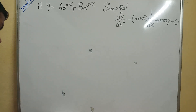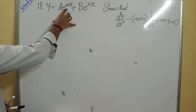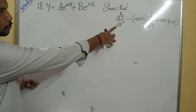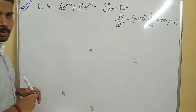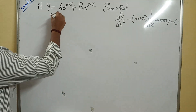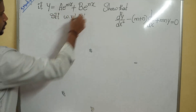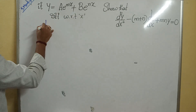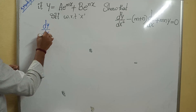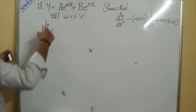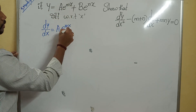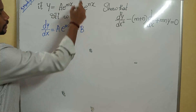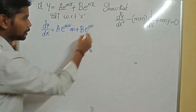Focus on the next question — also a 5-marks question. Given y = ae^(mx) + be^(nx), we need to prove that d²y/dx² − (m+n)dy/dx + mn·y = 0. Differentiating with respect to x: dy/dx = a·e^(mx)·m + b·e^(nx)·n.